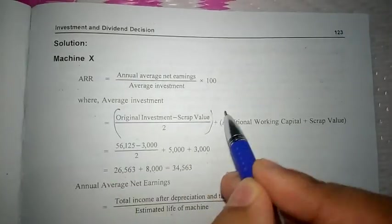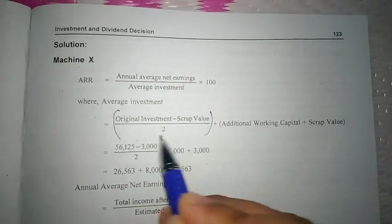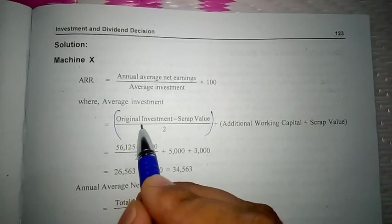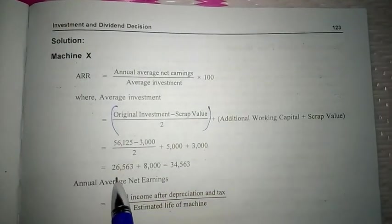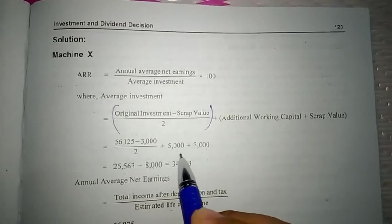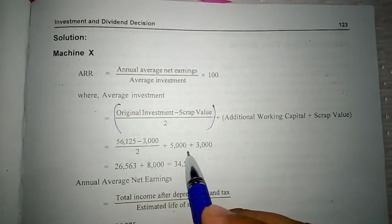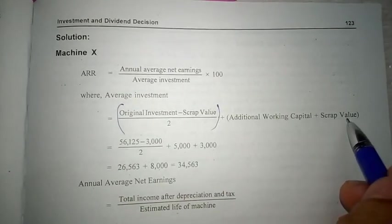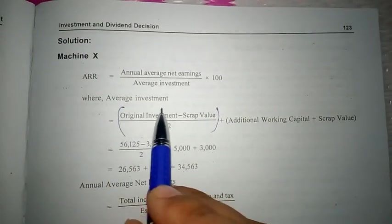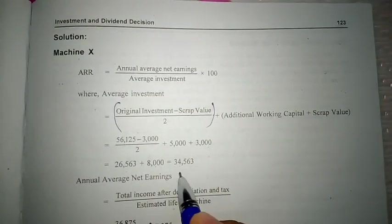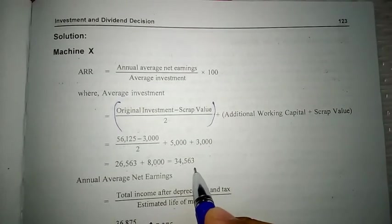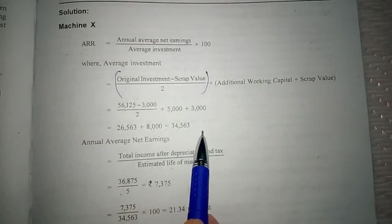First we deduct the scrap value from the original investment, then divide by 2 to get 26,563. Then we add back the working capital and scrap value, that is 8,000. The average investment for machine X is therefore 34,563 rupees.